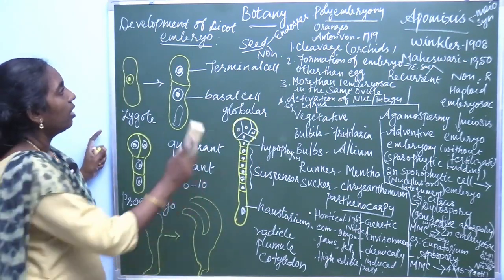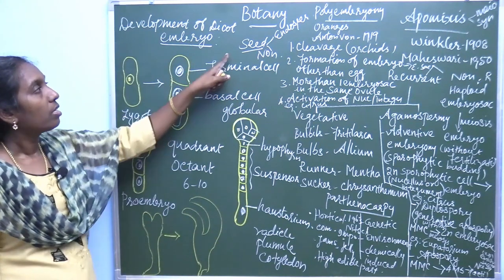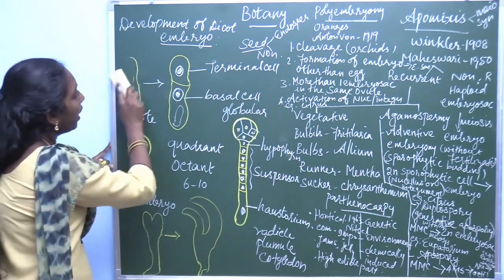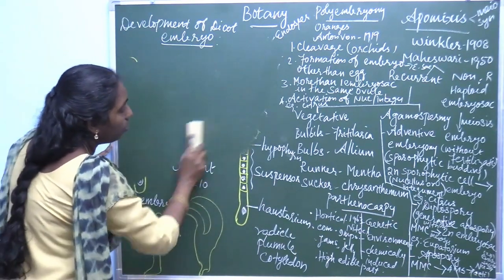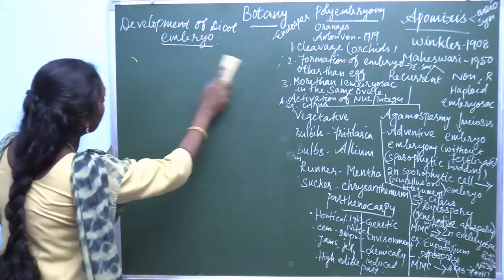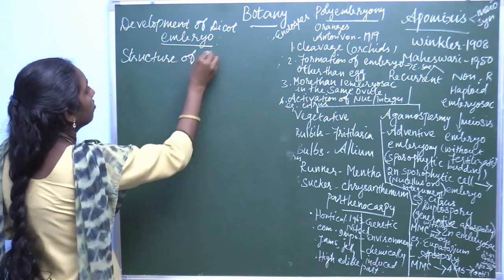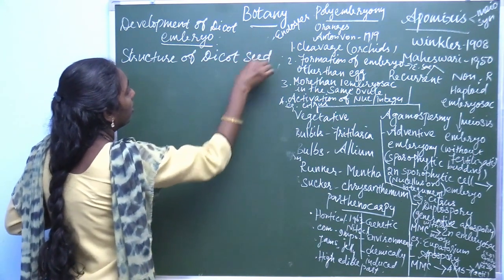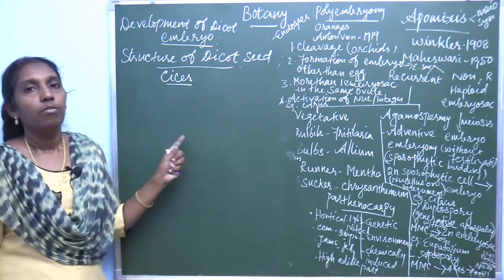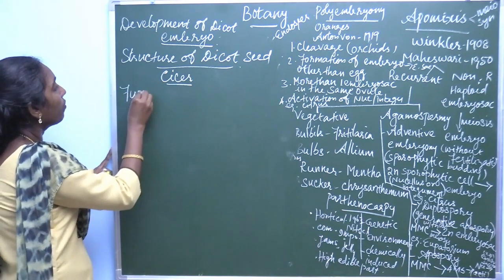Let's see the structure of dicot seed. The example of a dicot seed is Cicer (chickpea). The seed is attached to the fruit wall by a stalk called the funiculus. When the funiculus disappears, it leaves a scar called the hilum. Just behind the hilum there is a pore called the micropyle.